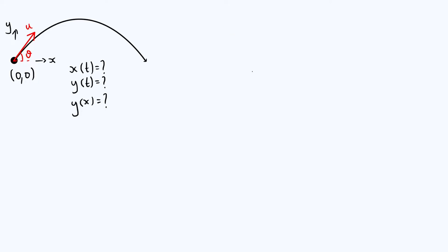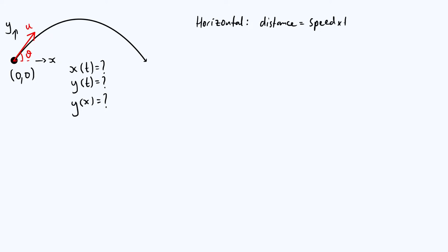I'm going to start with the horizontal component because it's a bit easier. If we think about what the horizontal part of the motion is doing, there's no acceleration in the horizontal direction because there's no air resistance. In fact, the only force acting on this projectile is its own weight — gravity pulling it straight down — and gravity doesn't have any horizontal component. So there's no acceleration, and we can just use the simple equation: distance equals speed times time.